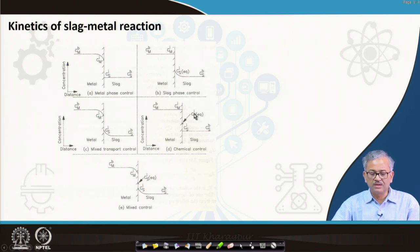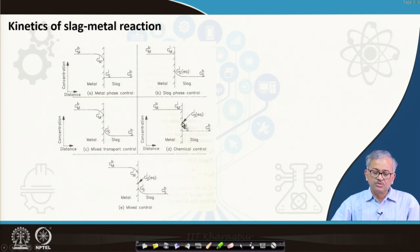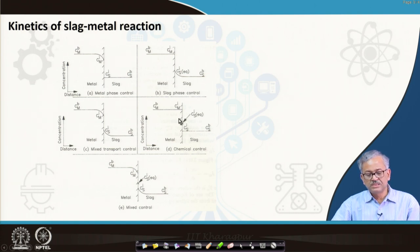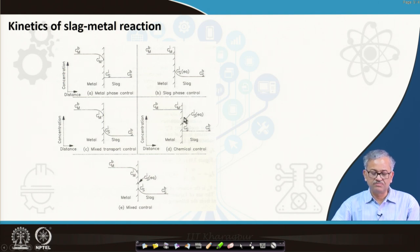In condition D — chemically controlled — mass transfer has no role because mass transfer is quite fast compared to the chemical reaction at the interface. The interface has not attained actual equilibrium: CMI is the metal side impurity concentration and CSI is the slag side impurity concentration at the interface, and these two concentrations are not at equilibrium. The equilibrium concentration lies a little higher; this is called chemically controlled when the surface reaction is the rate-controlling step.